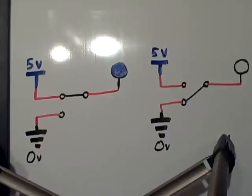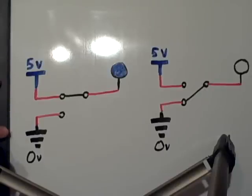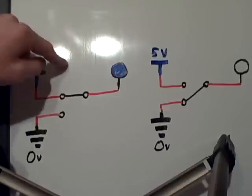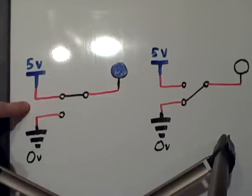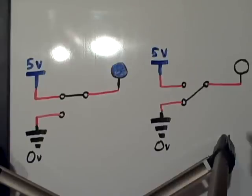I created this very simple setup just to show you some of the basics of what's going on in circuit recovery. On both of these, I hooked them up to five volts and zero volts — that's your power and ground. As you can see with this first one here, it's hooked up to the power. You can call that on, yes, or one.